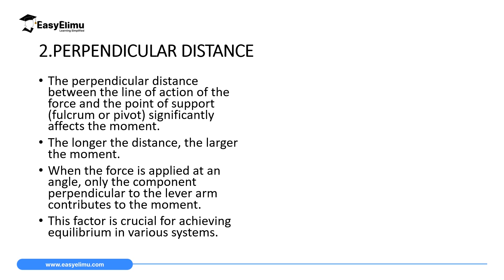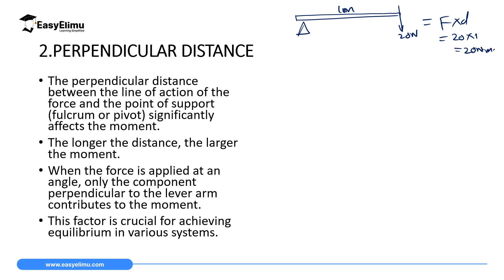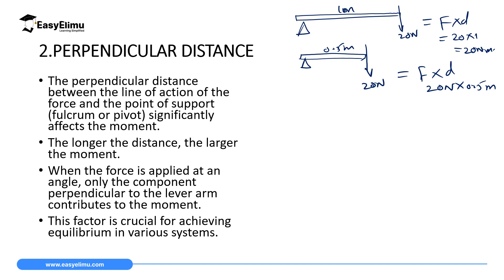Another factor that affects moment of a force is the perpendicular distance from the point of support. The longer the distance, the larger the moment — so perpendicular distance is directly proportional to moment. For example, if you have a meter rule with a force of 20 newtons at a distance of one meter, moment equals 20 times 1, giving 20 newton-meters. But if you use a half-meter rule — a distance of 0.5 meters — and apply the same 20 newtons, then moment equals 20 times 0.5.